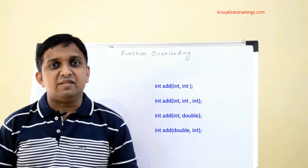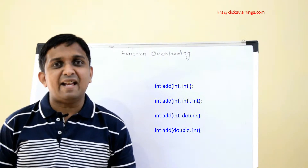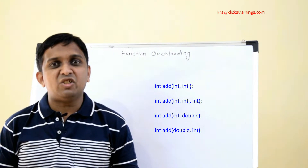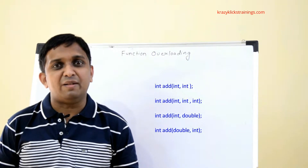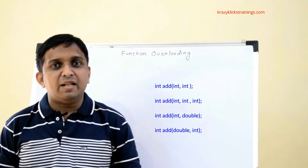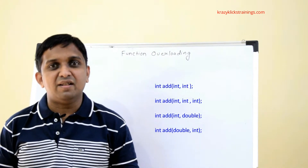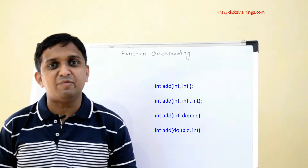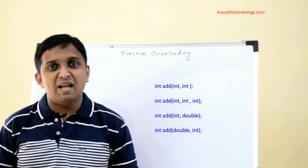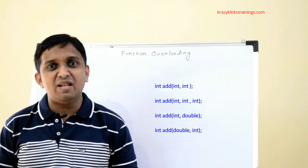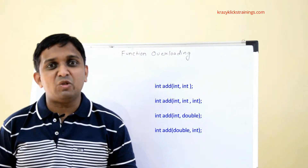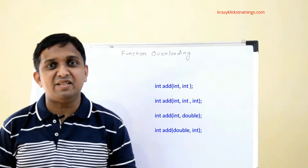Between the first and second add functions, the signature is different because the number of arguments is different. The signature of the second and third is different because the number of arguments and the data type are also different. Comparing the first and third, their signatures are different because the data type is different even though the number of arguments is the same. Between the last two, the number of arguments and data types are the same, but the sequence in which the arguments are passed is different, so the signature is different.